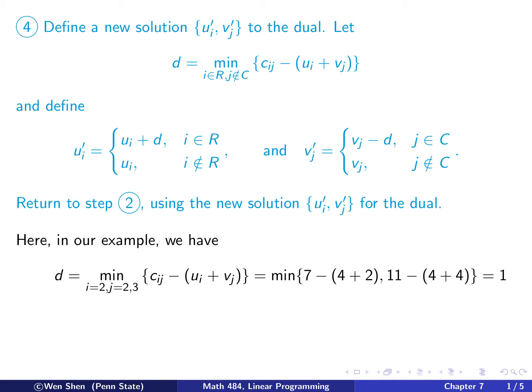And let's take a look at what this step means for our example. In our example, then we'll have the following. So since the R set contains 2, so the minimum is taking over i equals 2. And then j not in C, C set contains only index 1. So not C means j can take value 2 and 3 of this expression. So taking i equal 2, j equal 2, I will compute that. And take i equal 2, j equal 3, I will compute this. And then to find the minimum of those 2, this gives me 1, this gives me 3, so the minimum is 1. So d is 1 for this step.